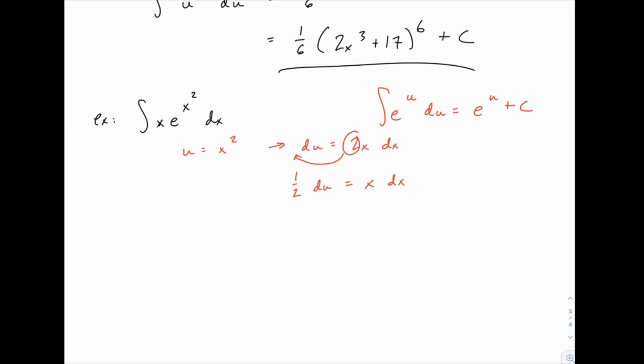Once we see that, we can make our substitutions, and we end up with 1/2 e to the u du. Notice I put the 1/2 out in front just because that's the way we're more used to writing it, and it looks better that way. But e to the x² got replaced with e to the u, and then x dx got replaced with 1/2 du. Now we can integrate. The 1/2 gets carried along for the ride, e to the u integrates to give us e to the u, and we have plus c at the end. And then the last step is just to replace u back with x².